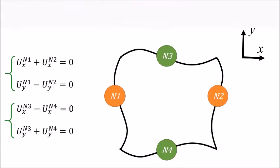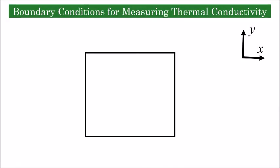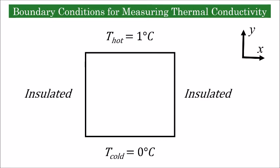Finally, for measuring thermal conductivity, a constant temperature gradient is applied between the top and bottom sides of the RVE, while the left and right sides remain insulated.